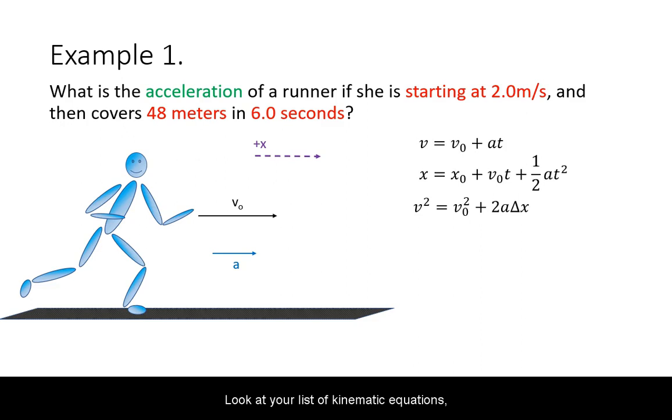Look at your list of kinematic equations and see which ones include the unknown. In this example, all of the equations involve acceleration. So instead, we narrow down our selection based on other given variables.